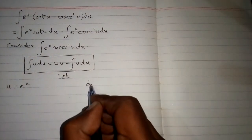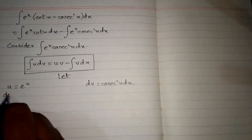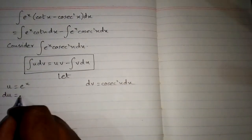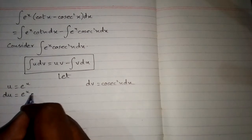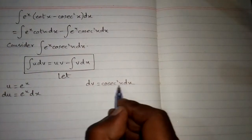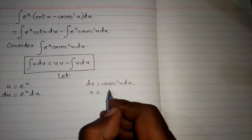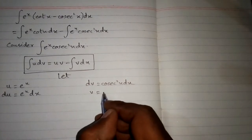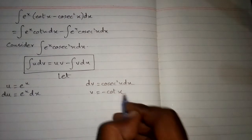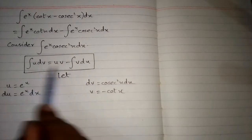We let u equal e to the power x and dv equal cosec squared x dx. The differential du equals the derivative of e to the power x, which is again e to the power x, so du equals e to the power x dx. Integrating both sides, integral of dv is v, and the integral of cosec squared x is minus cot x.